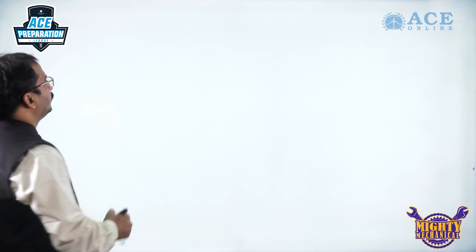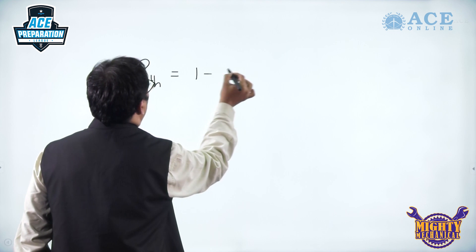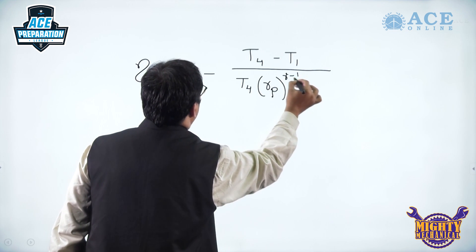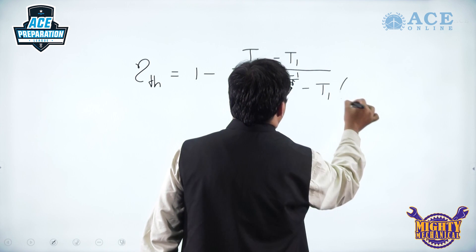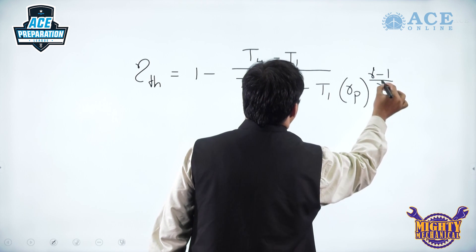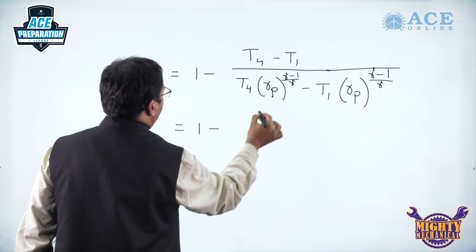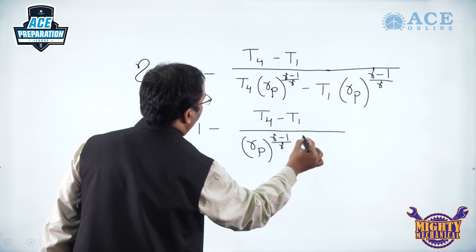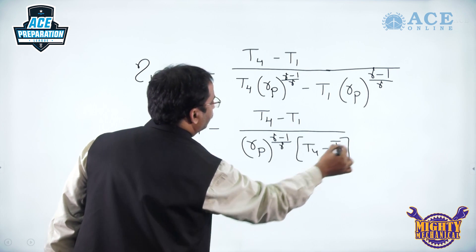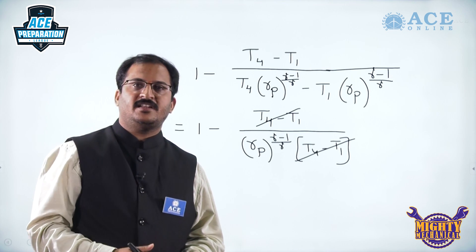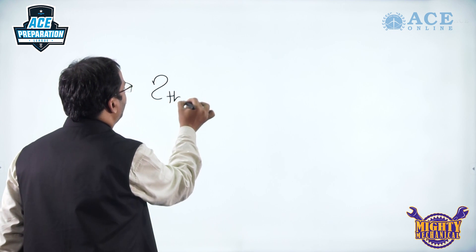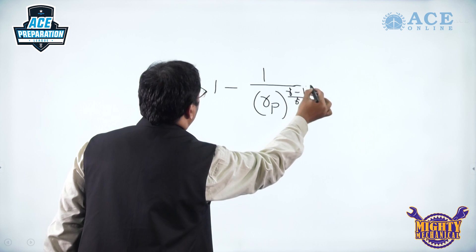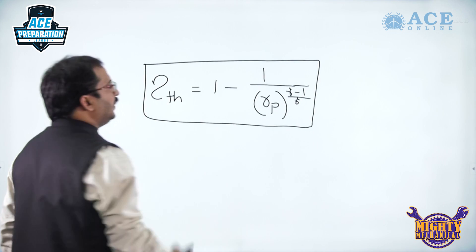Substituting these two expressions into the efficiency formula, we get thermal efficiency = 1 - (T4 - T1) / (T4 × R_P^((γ-1)/γ) - T1 × R_P^((γ-1)/γ)). Taking R_P^((γ-1)/γ) as common, T4 - T1 cancels, and finally the air standard efficiency or thermal efficiency of the Brayton cycle is 1 - 1/R_P^((γ-1)/γ), expressed in terms of the pressure ratio.